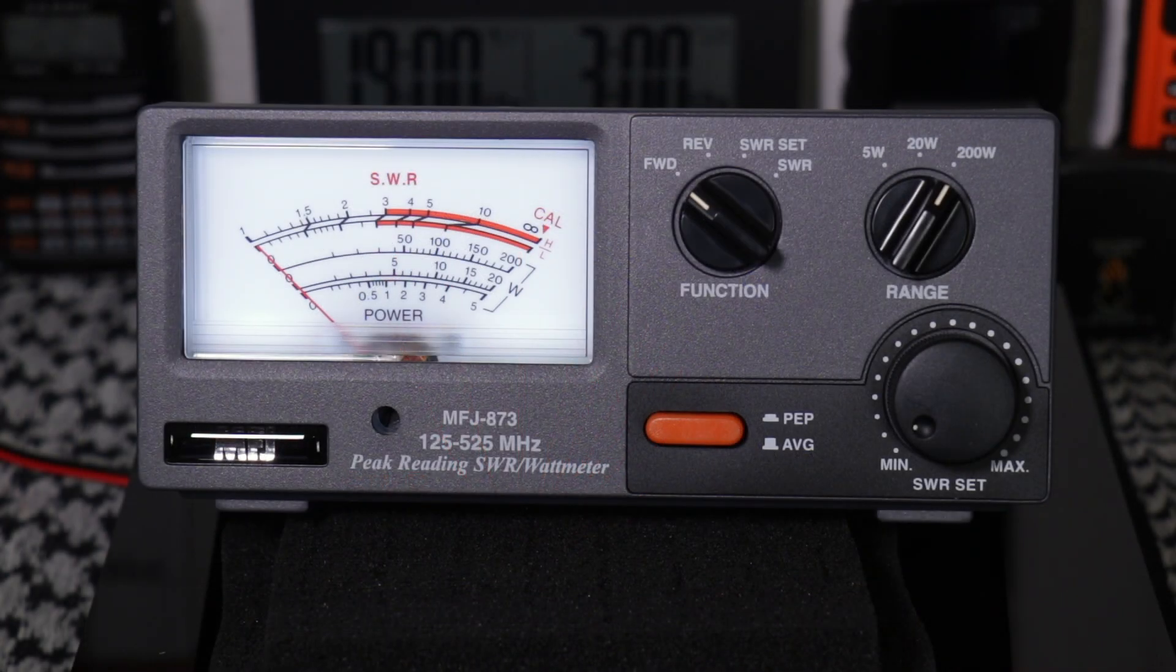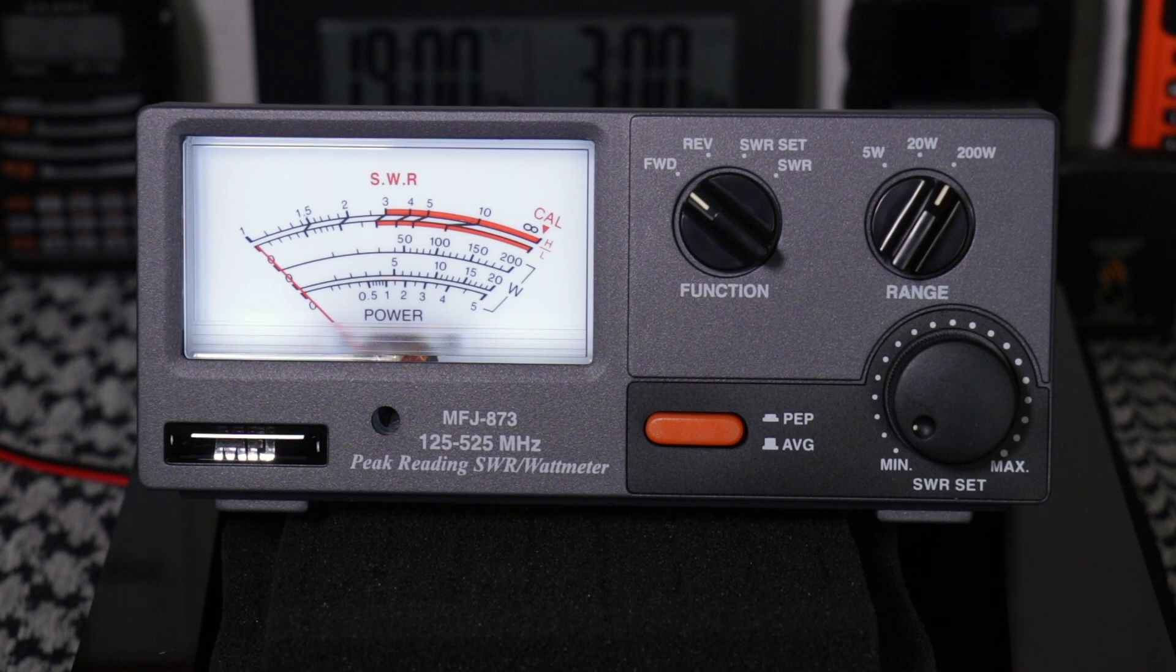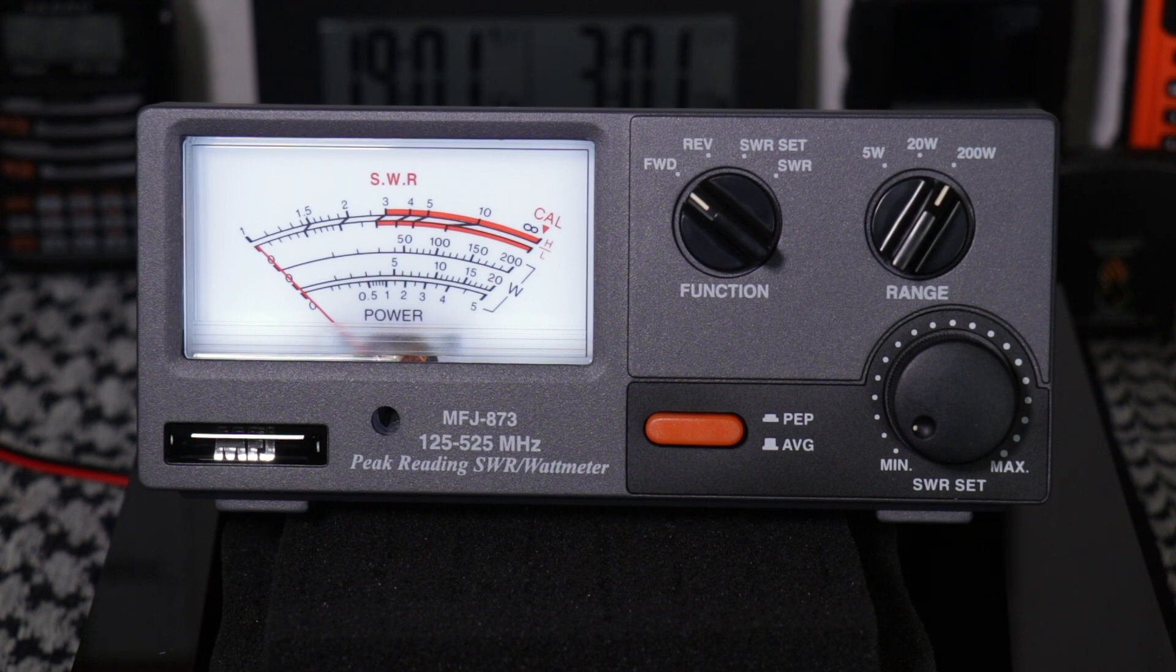The last one we have is the MFJ 873. Like the others it covers 125 to 525 megahertz. Power range is 1 watt to 200 watts. Power scale 5 watt, 20 watt and 200 watt. Maximum power 200 watts. The minimum power required is 1 watt. It has an input output impedance of 50 ohms. And the dimensions are 7.5 inches wide, 3.35 inches high, and 5.3 inches deep. Weighs about one and three quarter pounds.